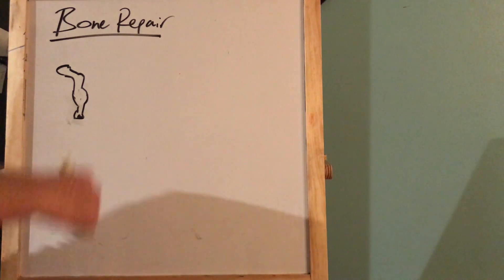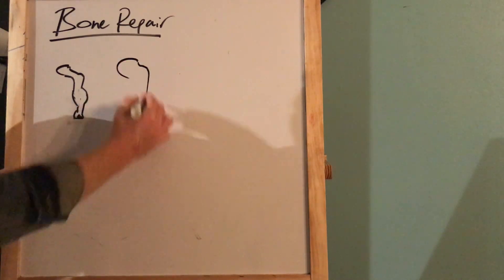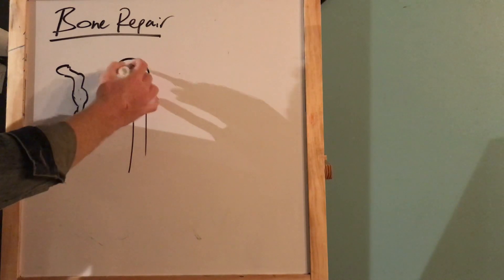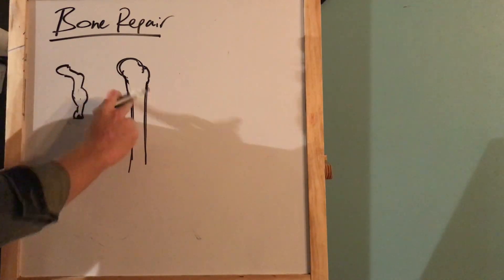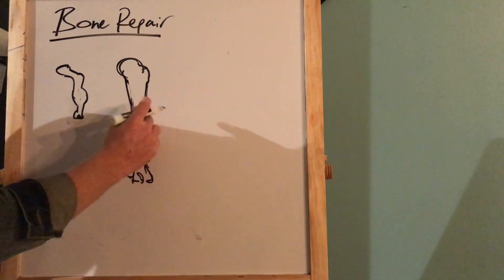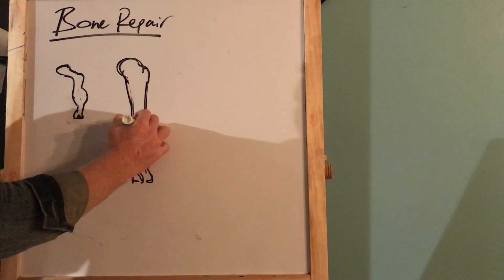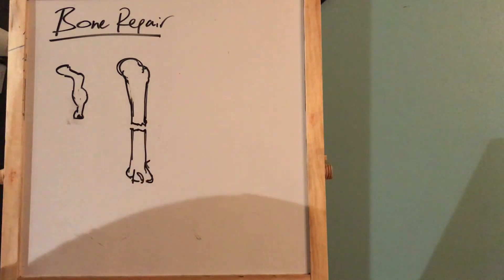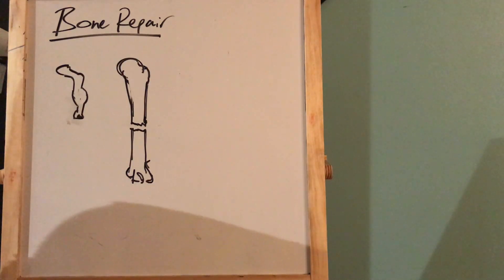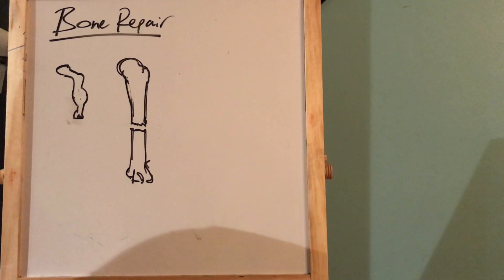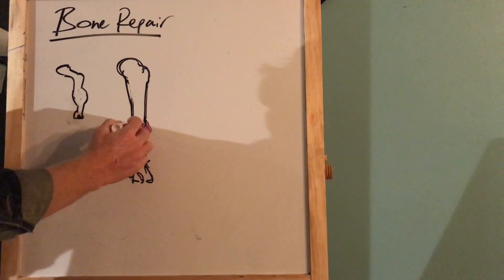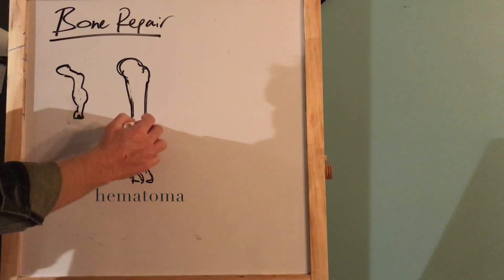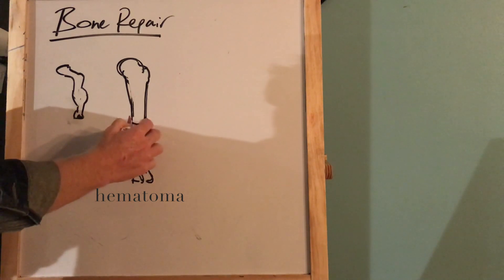Let's talk about the different steps the bone takes after a break in order to repair itself. I'm going to draw a typical long bone here — we'll call it the humerus. Let's imagine a break occurs right here, a clean break causing a complete separation between the proximal and distal ends. The first thing that's going to happen is there's going to be a lot of bleeding, because all those blood vessels in the bone get broken or compromised. That's going to cause a hematoma — just a fancy word for a bruise — and that blood is going to clot, leaving a large section of clotted blood.